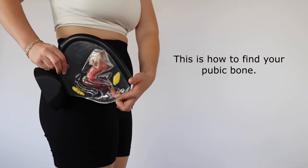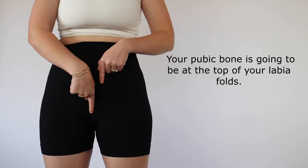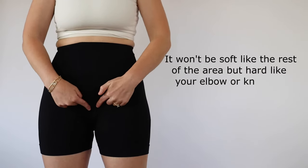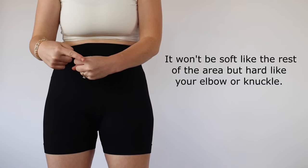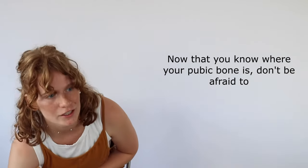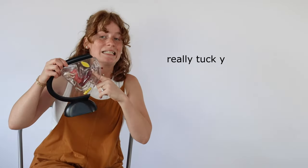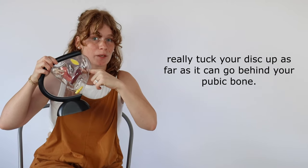This is how to find your pubic bone. Your pubic bone is going to be at the top of your labia folds and obviously it won't be squishy like the rest of the area. It's gonna be very hard like maybe an elbow or a knuckle because it is a bone. So now that you know where your pubic bone is don't be afraid to really tuck your disc up as far as it can go behind your pubic bone.